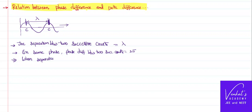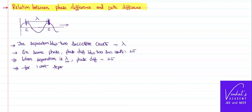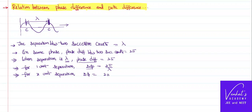When the physical separation — the distance between the particles — is lambda, the phase difference between the two successive crests is 2π. So for one unit separation, the phase difference delta phi is 2π divided by lambda. For a separation of x units, delta phi equals 2π divided by lambda, times delta x. That is very simple.